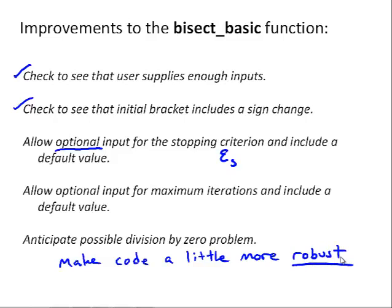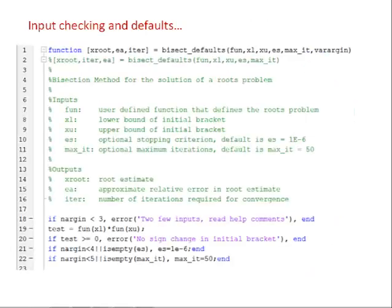So, let's look at some code that implements the first four of these improvements. So, here is a modified code, modified bisect function called bisect_defaults, that implements some of those improvements.